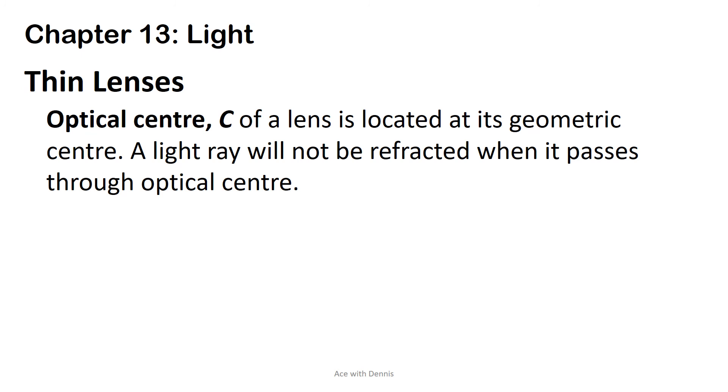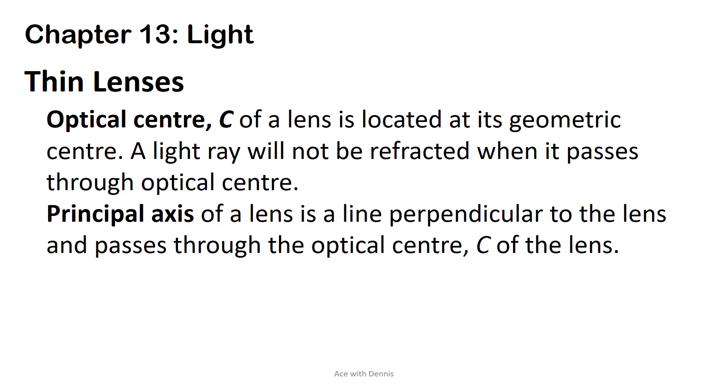Thin lenses. Optical center, C, of a lens is located in its geometric center. A light ray will not be refracted when it passes through optical center. Principal axis of a lens is aligned perpendicular to the lens and passes through the optical center, C, of a lens.